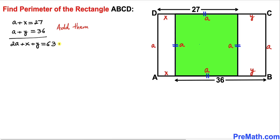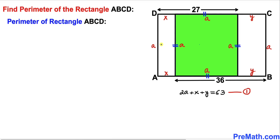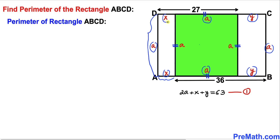We'll call this equation number one. Now we are going to calculate the perimeter of this rectangle ABCD. Starting from one side: this side length is A, then we add X, then A, then Y, then A, then Y, then A, and finally X, going all the way around the rectangle.